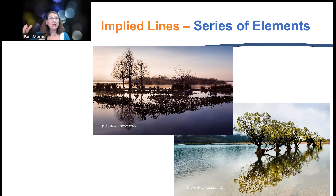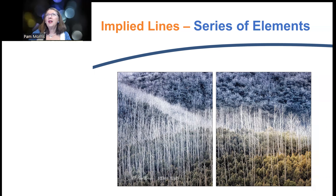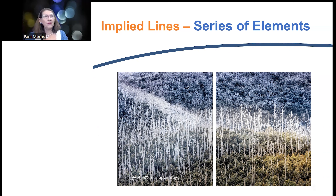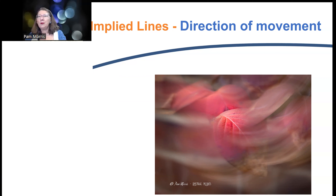We use these lines to guide the viewer's eye around the image and to engage them. Balls of wool create a line; different garments create lines. Trees can create lines — in some images it's not about the trees themselves but about the shapes and angles of those lines. Lines can also imply movement, as with the car racing example. Intentional camera movement images are all about lines, and I really encourage you to explore moving your camera to get lines that add to the image.